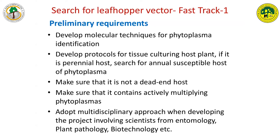Out of maybe 100 samples, you may get positive results for phytoplasma in two or three groups. Those are the groups of insects that are the vectors — not the others. Discard the others and start working only on that small group. This is how we can fast-track the search for these vectors.